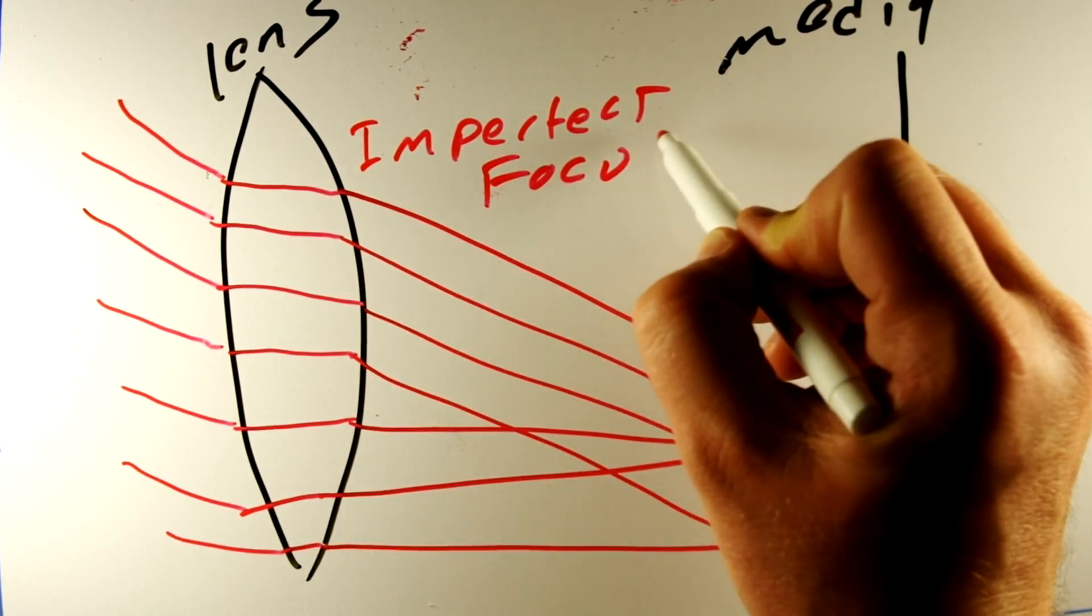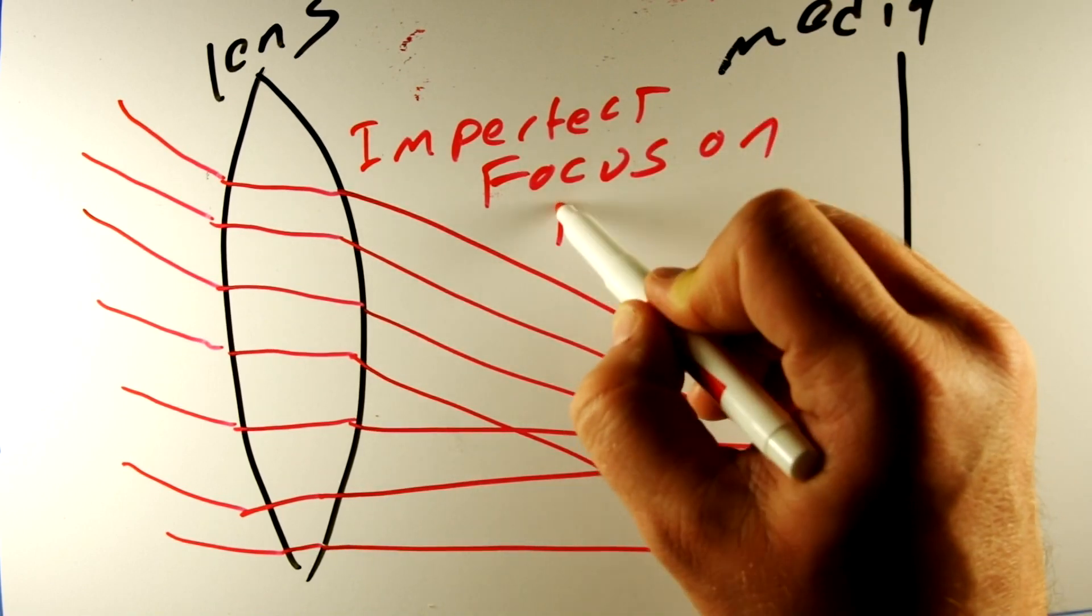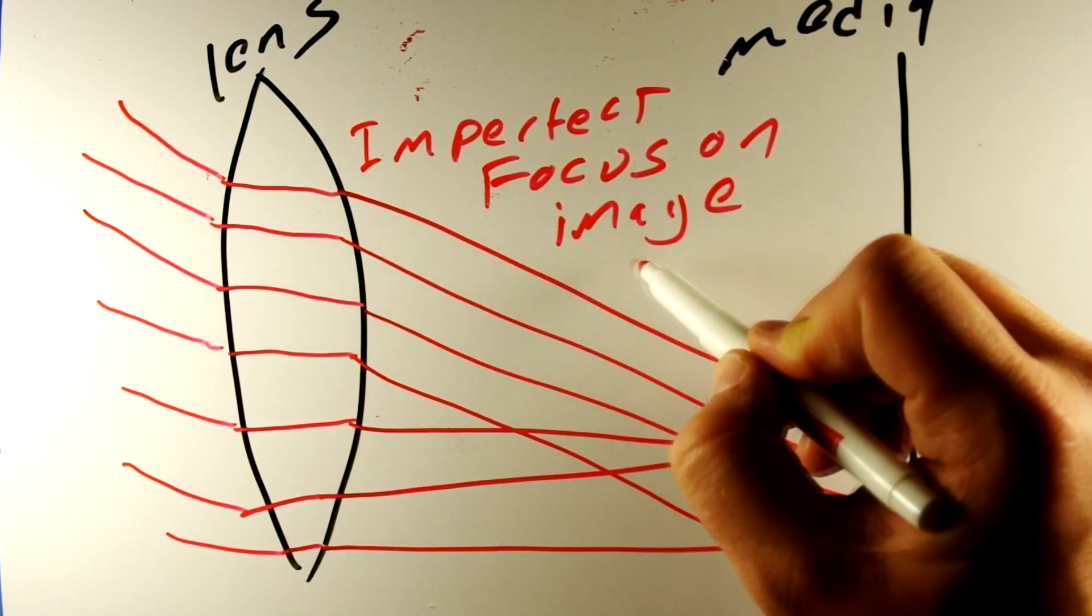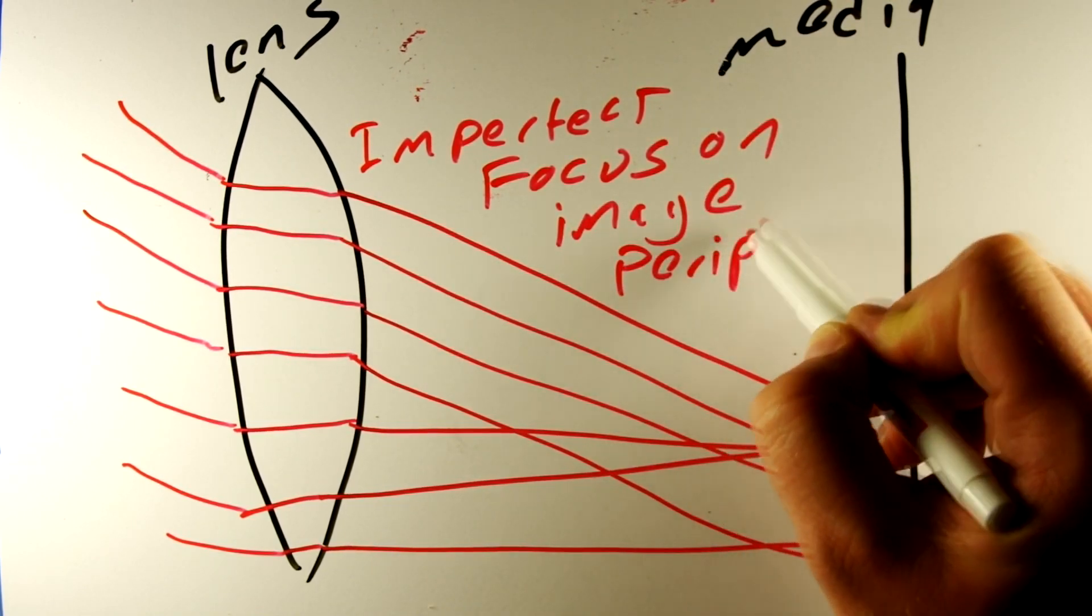Although, when a lens has tons of coma, the images, like a Petzval lens, can be fairly interesting in some uses.